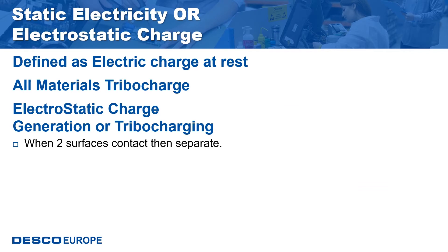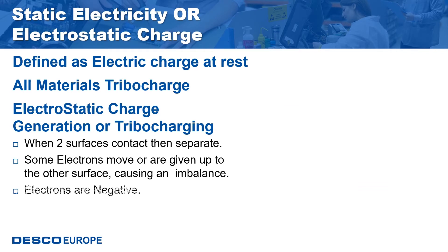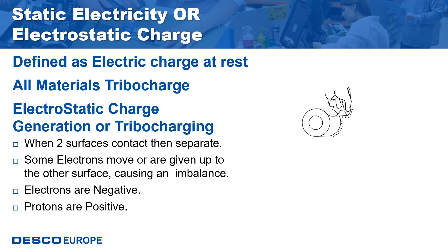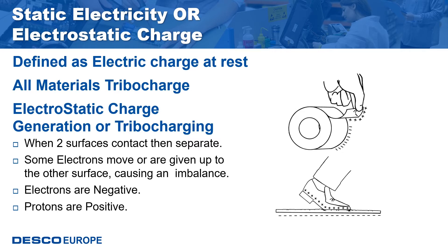Let's start by looking at static electricity, also called electrostatic charge. The first thing to note is that all materials will tribocharge. Electrostatic charge generation occurs when two surfaces in contact then separate — some atom electrons transfer, causing an imbalance. One surface has positive charge polarity and one has negative charge polarity. Both polarity charges need to be controlled in your ESD control program, as both positive and negative charges can discharge and damage electronic components.